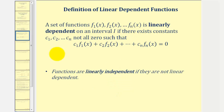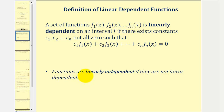So we mentioned this in the last lesson, but if we have a set of functions f₁ through fₙ, the set is linearly dependent on an interval I if there exist constants c₁ through cₙ, not all zero, such that they satisfy this equation here, where we have a sum of multiples of the functions equal to zero. And the functions are linearly independent if they are not linearly dependent.